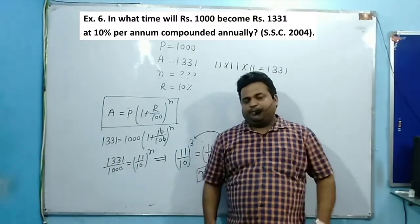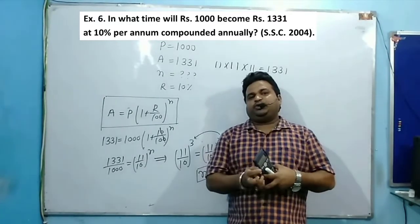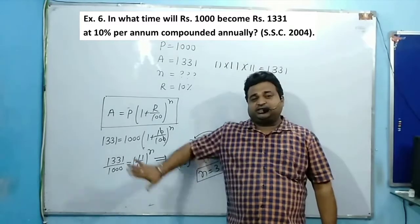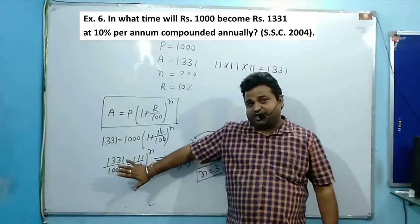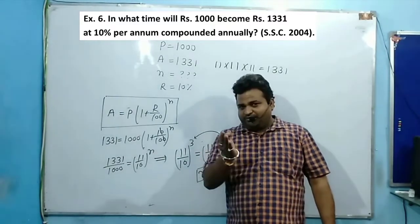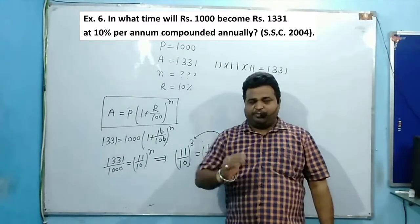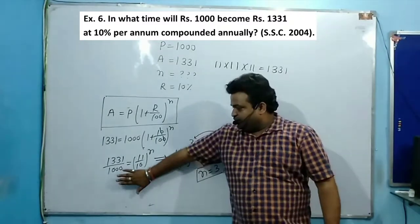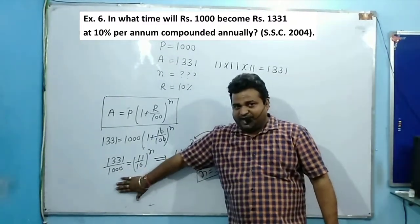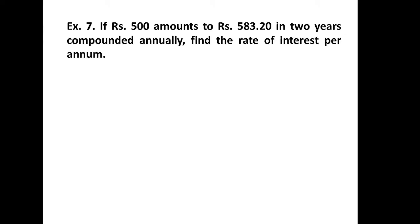The basic idea for this type of question is: whenever you need to calculate the number of years in a compound interest problem, you apply this power-matching method to find the value of n. Now let's move to the next question, which is also very important.